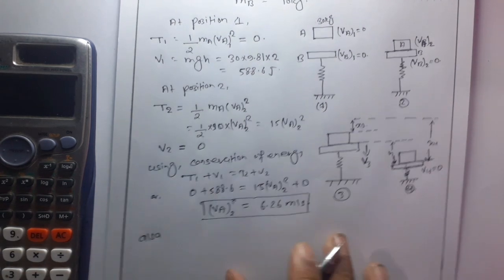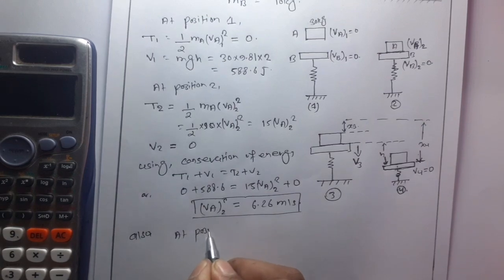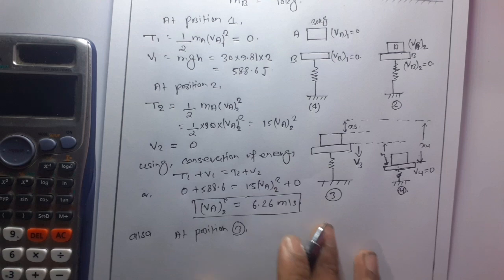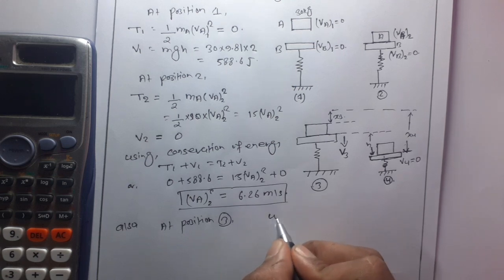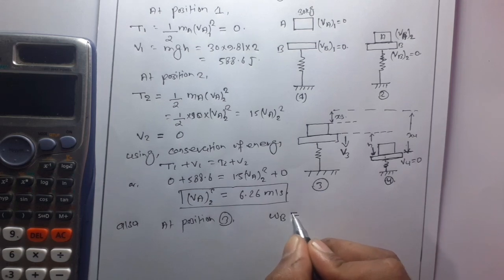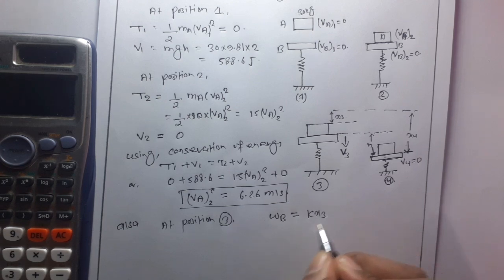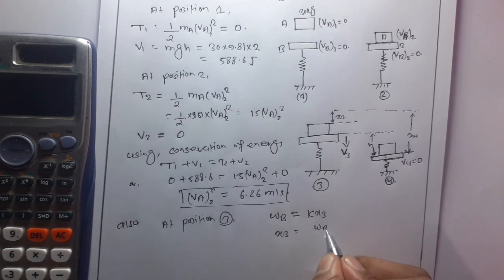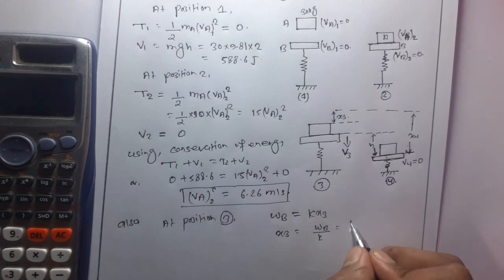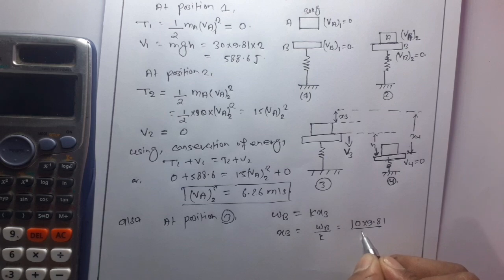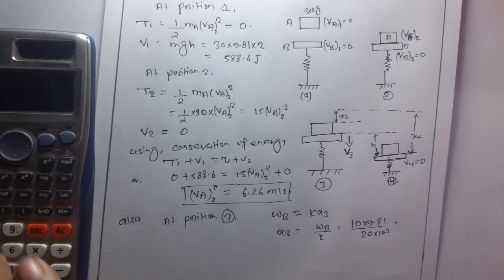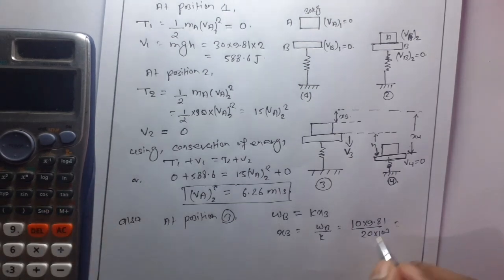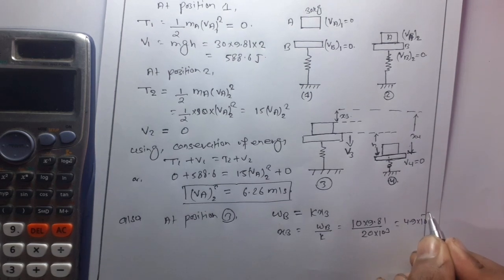At position three, since the impact is perfectly plastic, the static deflection x3 is given by wB divided by k. So x3 = (10 × 9.81) / (20 × 10³) = 98.1 / 20,000 = 4.9 × 10⁻³ meter.